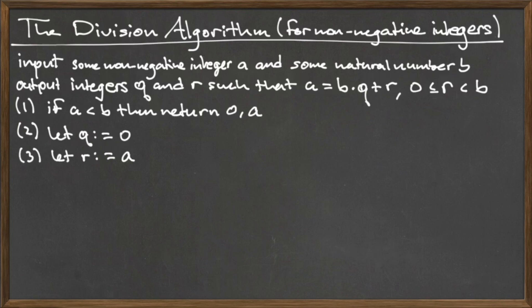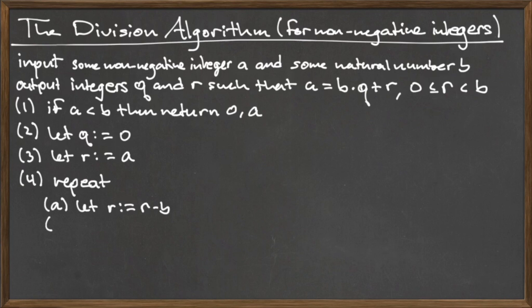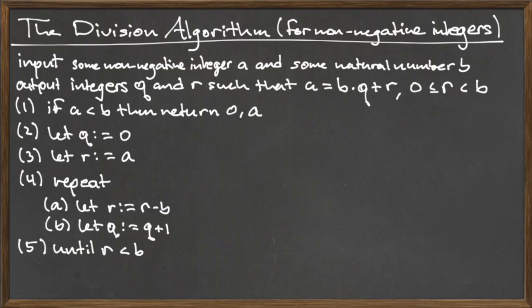Assuming that the conditional statement in step 1 is false, we proceed to steps 2 and 3, which are to define the variable q and assign it the value 0, and create the variable r and assign it the value of a. In step 4, we come to a repeat statement, signifying that we are entering a loop. This loop consists of two steps: redefine r to take the value r minus b, and redefine q to take the value q plus 1. We continue until the stopping condition r is less than b is satisfied, at which point we return the values q and r.